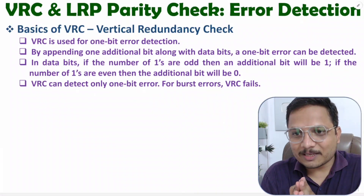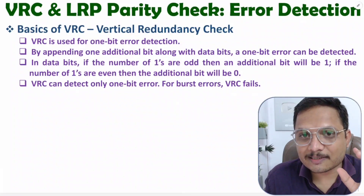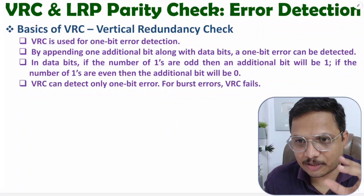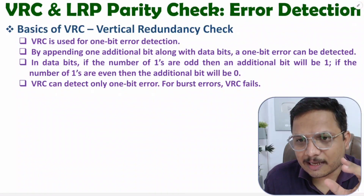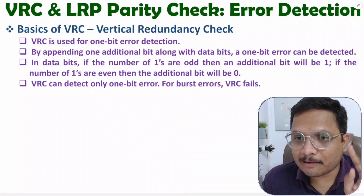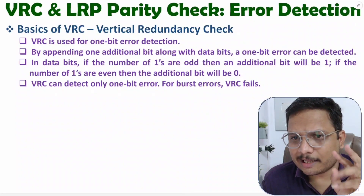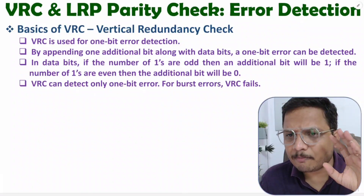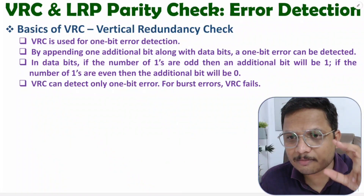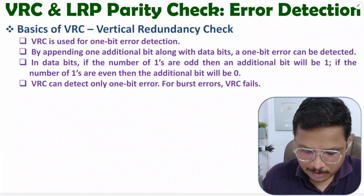Hello friends, welcome to Engineering Funda Family. In this video, I'm going to explain VRC and LRP parity check methods for error detection. VRC is a one-dimensional parity check method and LRP is a two-dimensional parity check method. I'll explain both methods along with practical case studies to give you more clarity on how both methods work.